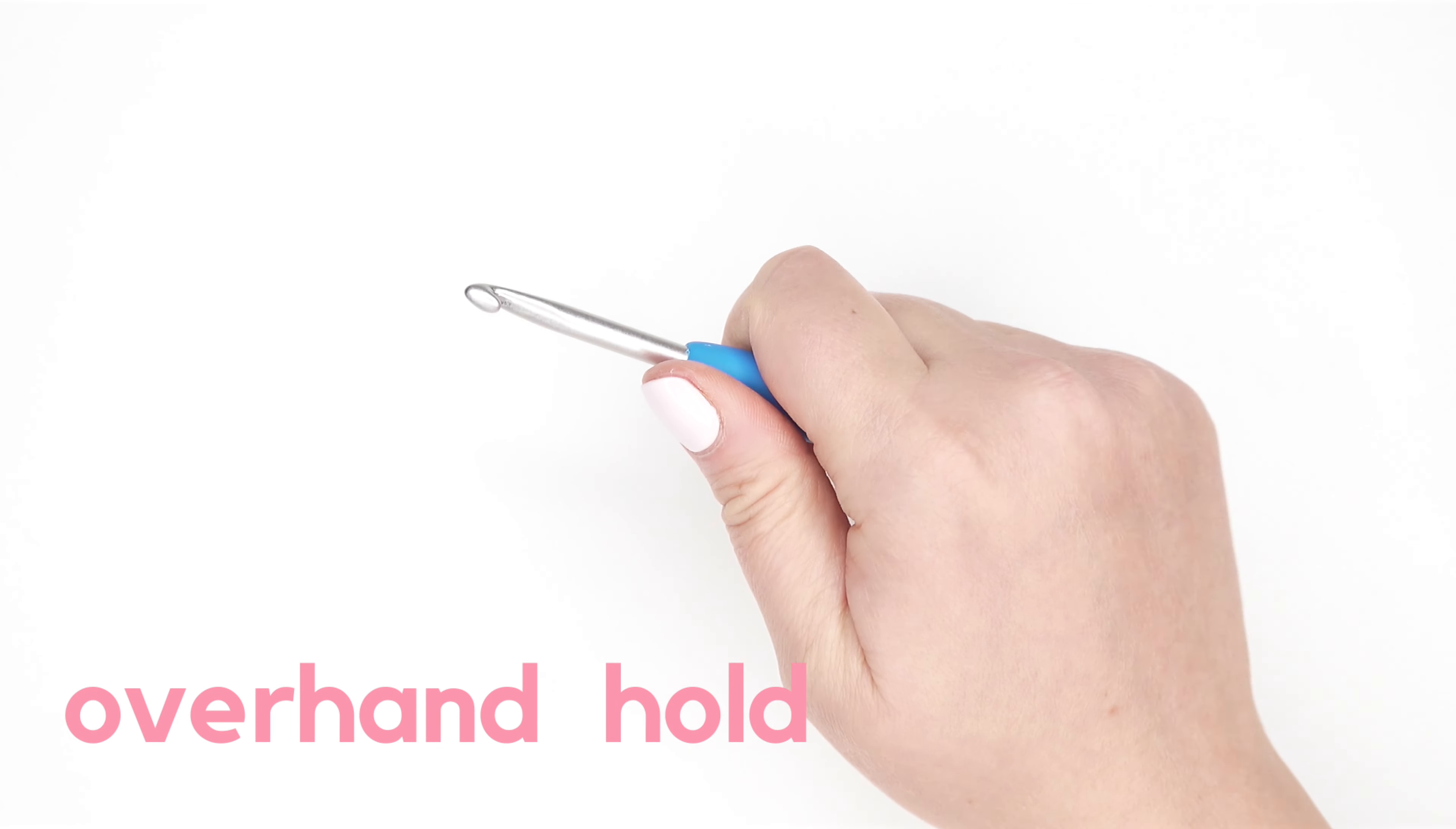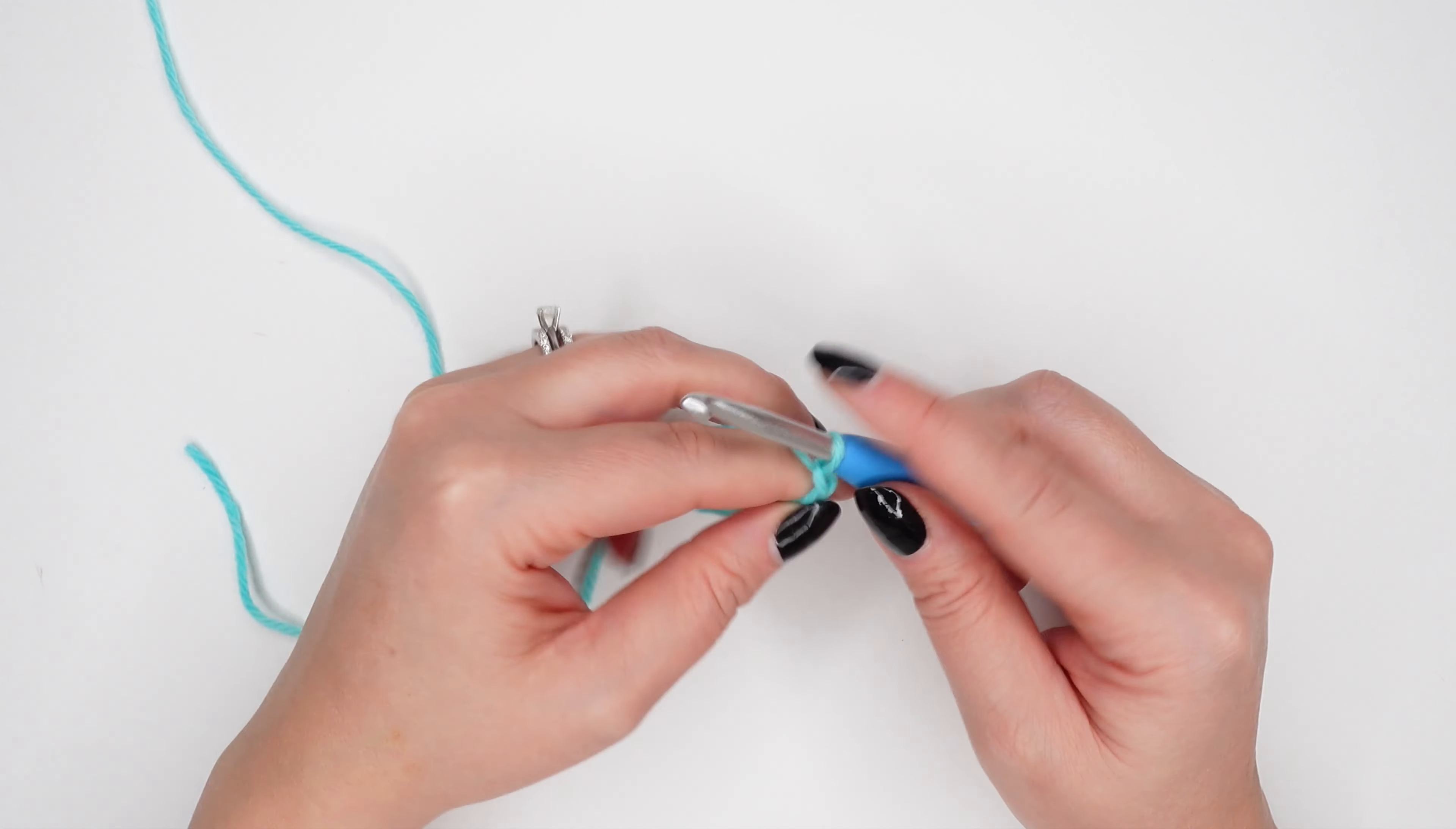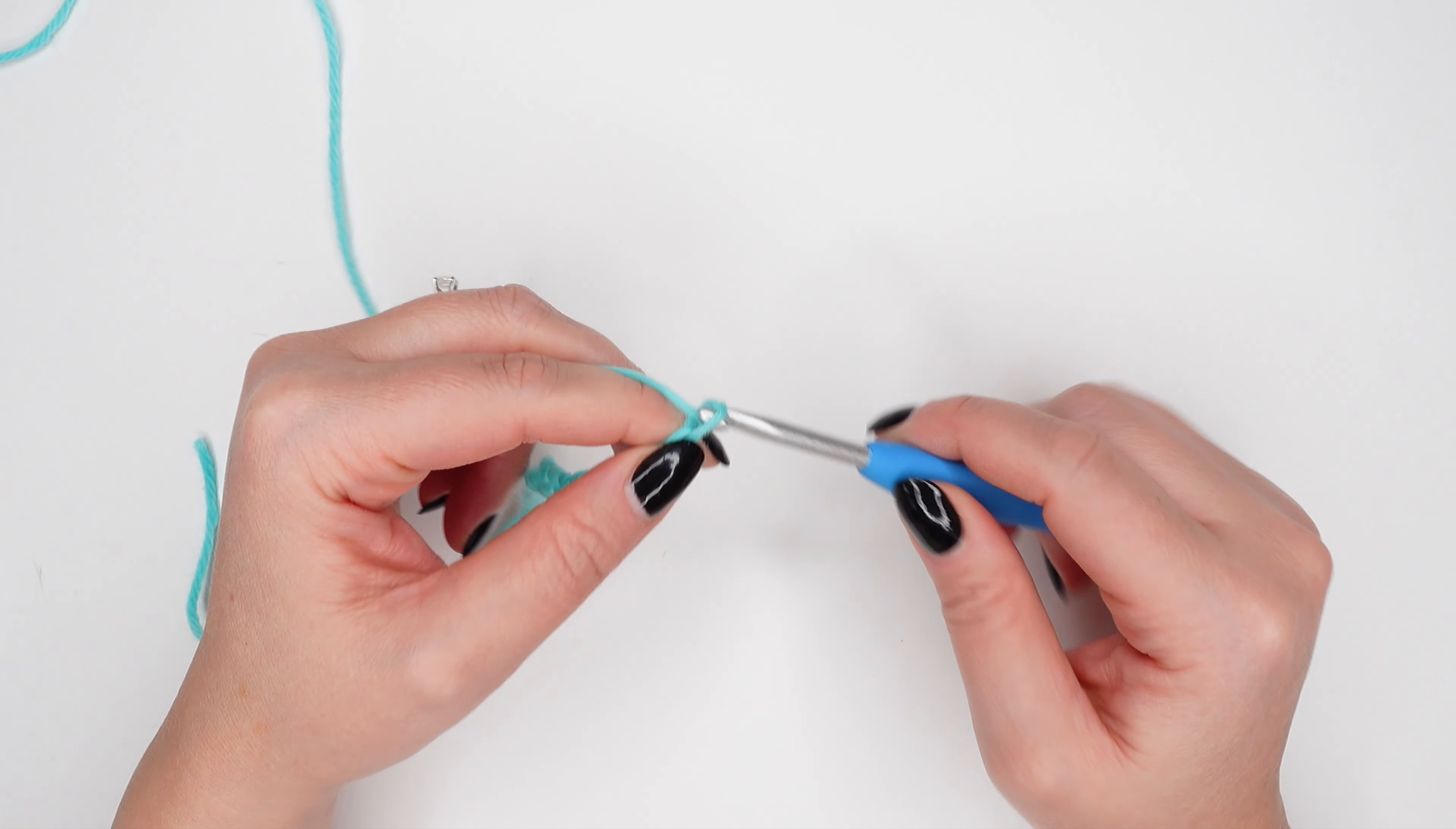I feel like that would probably hurt my wrist if I held my hook that way. Once again, you need to play around with what works best for you. One thing to keep in mind as you're working your chains: you want to have a light hold on your crochet hook and not a tight grip, and let the weight of the hook do most of the work.